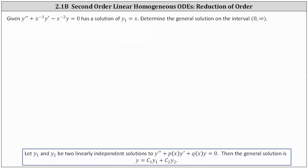The given second order linear homogeneous differential equation has a solution of y1 equals x. We're asked to determine the general solution on the interval from zero to infinity. We'll be using the method of reduction of order.